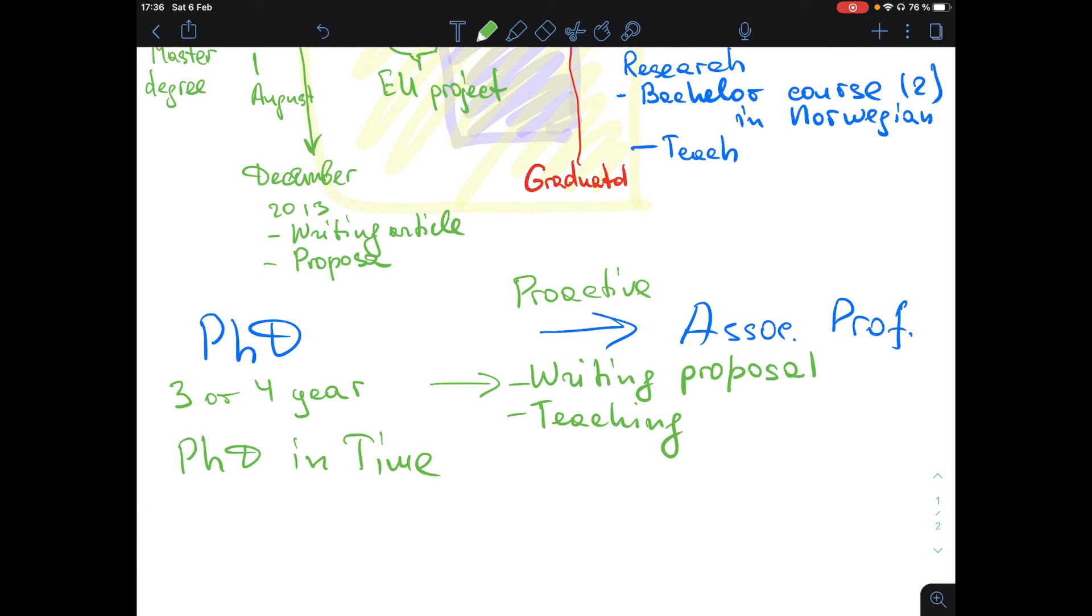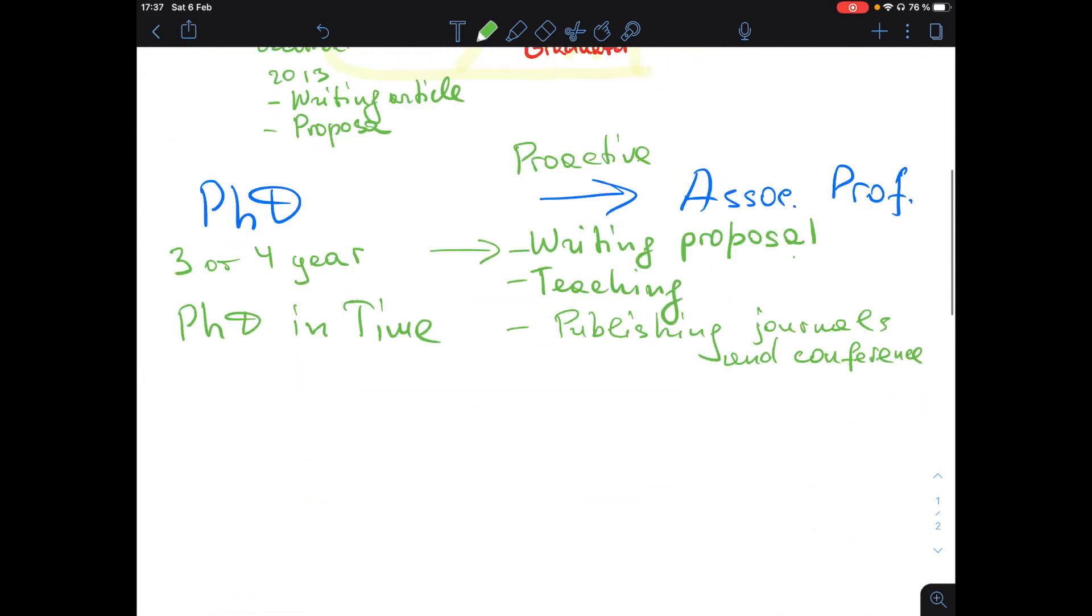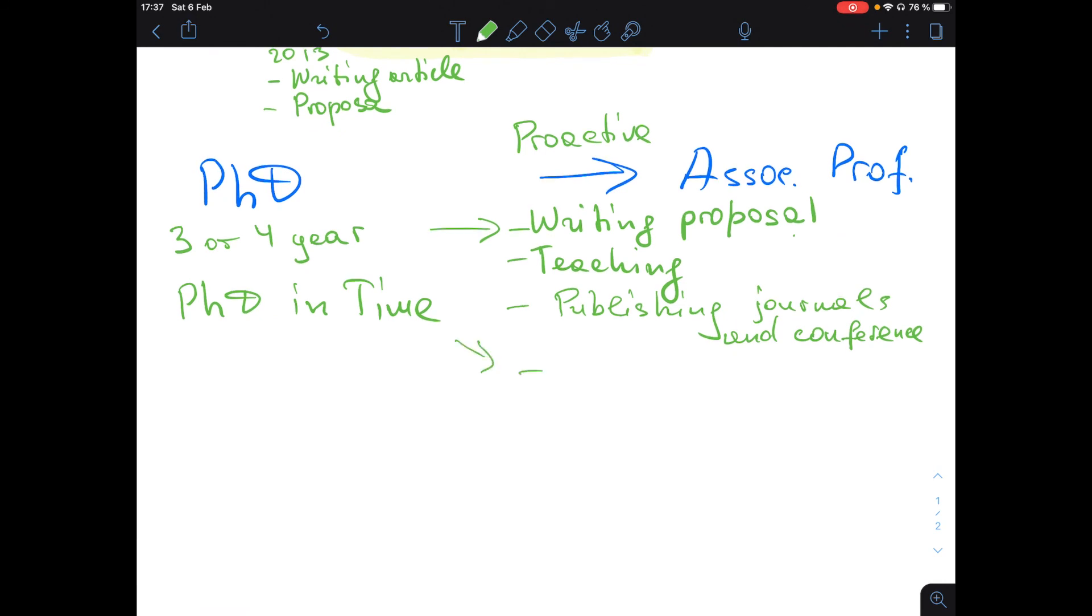You need to be proactive, look for empty spots in the research arena in the country where you are. If it's in Norway, evaluate your university, evaluate other universities, look what they're searching for. For associate professor you need to have already experience writing proposals, doing teaching, publishing in journals and conferences. At least an unfinished PhD. Norwegian would be a plus because it means you can teach bachelor students. Try to build good collaboration in the international community and be very proactive. This is my main feedback to you.